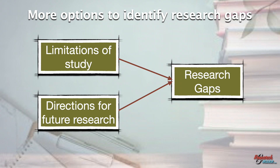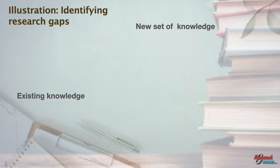Directions for future research is one of the great ways to identify research gaps. A researcher typically builds his research gaps from the literature review and subsequently recommends possible gaps for future researchers from the limitations of his study and directions for future research.